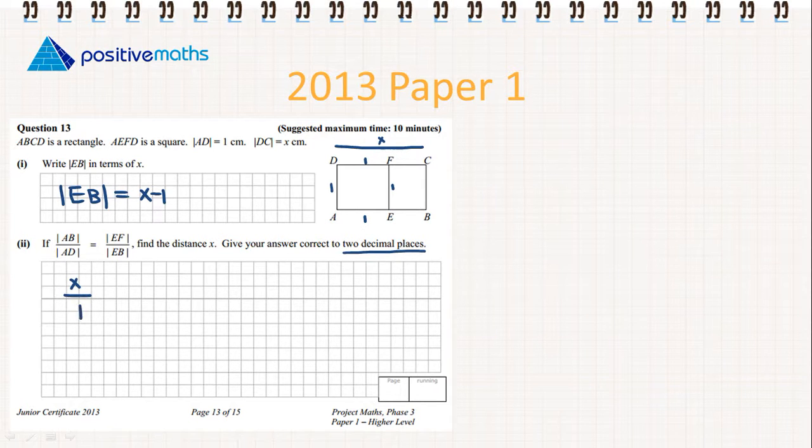So we fill in. AB is equal to x, AD is equal to 1, EF is equal to 1, and EB is equal to x minus 1 from part 1.